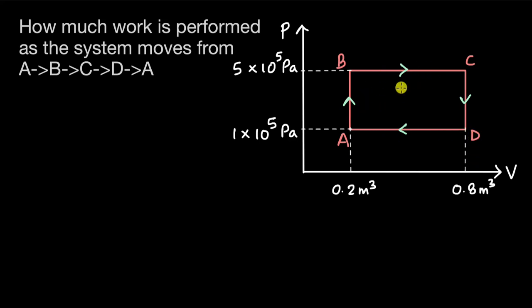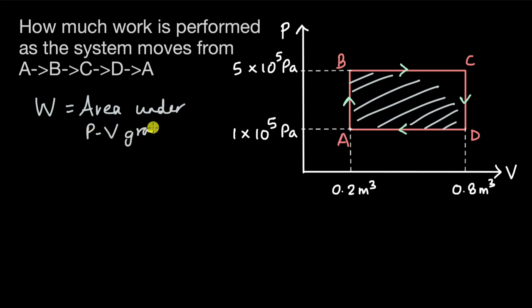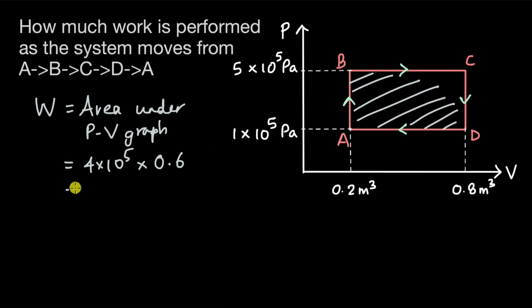The quick way to do this is to find the area under the PV curve, which gives the work done directly. If we find the area of the rectangle, this is length times width. Length is the change in pressure: 4×10⁵ pascals, and ΔV is 0.8 minus 0.2, which is 0.6 m³. This comes out to be 2.4×10⁵ joules.